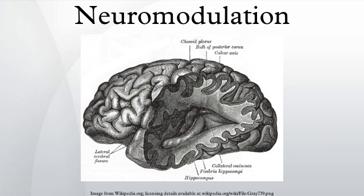Neuromodulation is the physiological process by which a given neuron uses one or more neurotransmitters to regulate diverse populations of neurons. This is in contrast to classical synaptic transmission, in which one presynaptic neuron directly influences a single postsynaptic partner. Neuromodulators secreted by a small group of neurons diffuse through large areas of the nervous system, affecting multiple neurons.